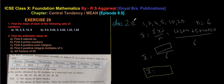I hope you understood. These are all related to ungrouped data where you use the simple formula: add all the observations and divide by the total number of observations to find the mean.